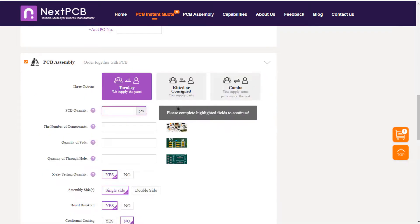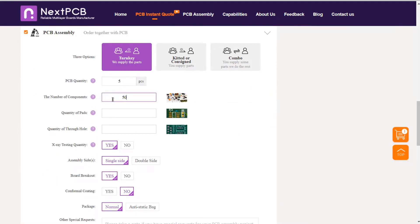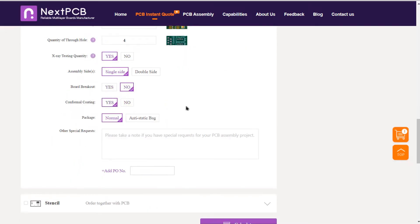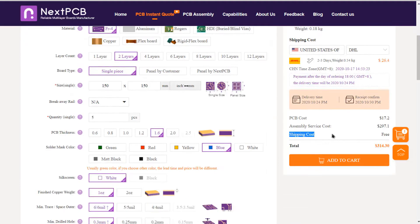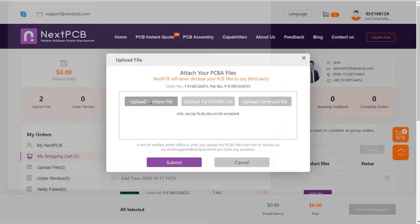On the PCB assembly part, select quantity, number of PCBs, quantity of through holes, number of pads, x-ray testing and go to place the order. Now you can see the shipping charge is zero. Isn't it great? Now you can place the order by uploading the Gerber files and bill of materials.